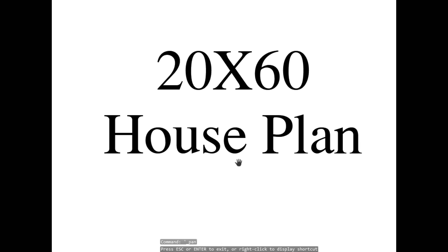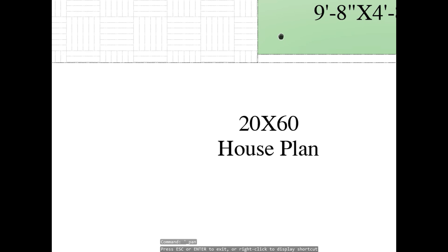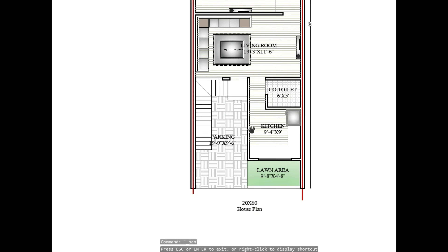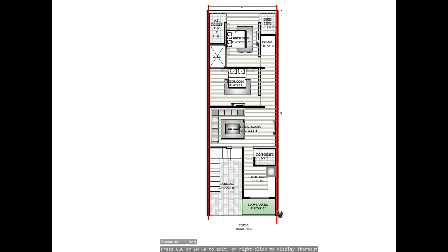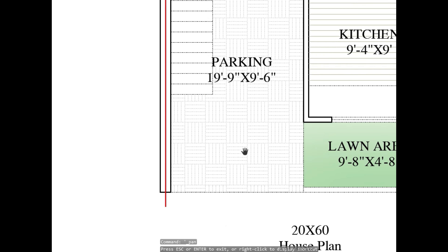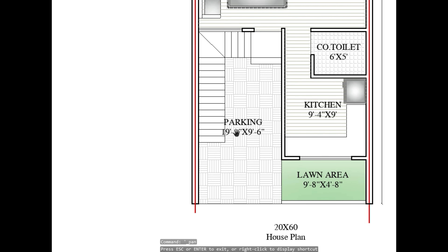In this video today we are looking at a 20 by 60 house plan. Let's get started with the planning. You can see here 20 feet wide and the length is 60 feet. Let's start with the main entry — here is the main entry.